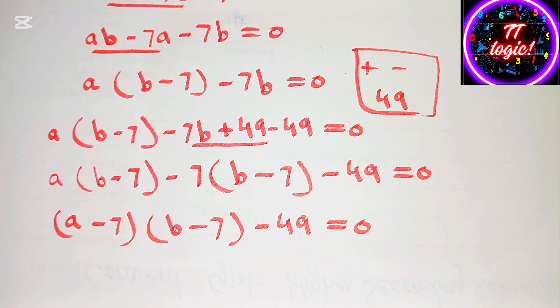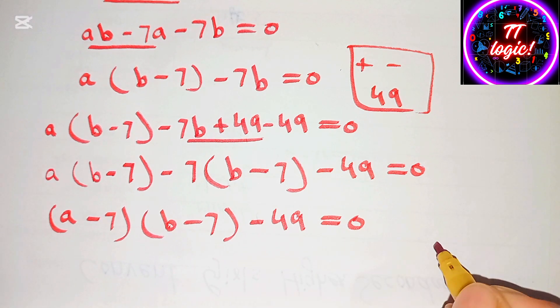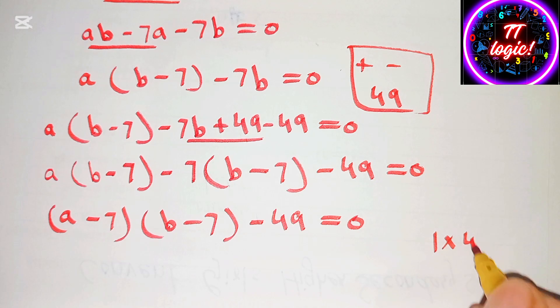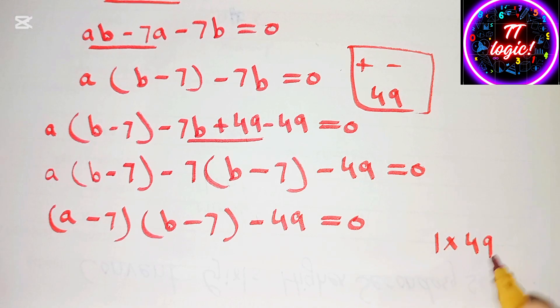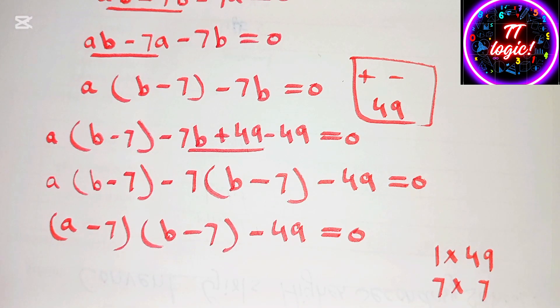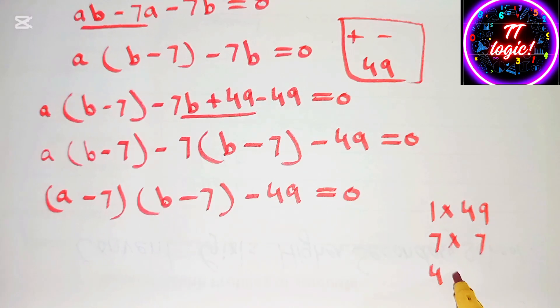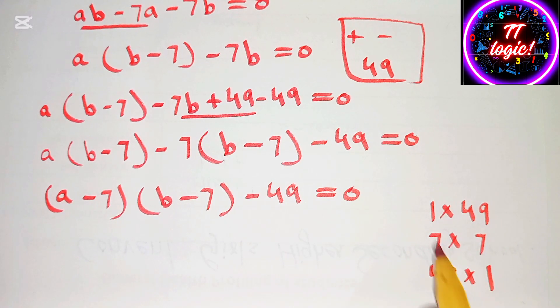Now we factorize 49. The factor pairs of 49 are: 1 times 49, 7 times 7, and 49 times 1. We will solve each case separately.